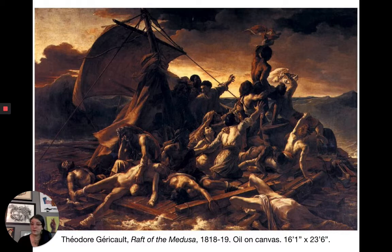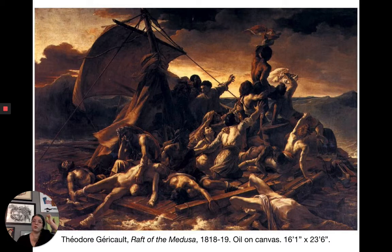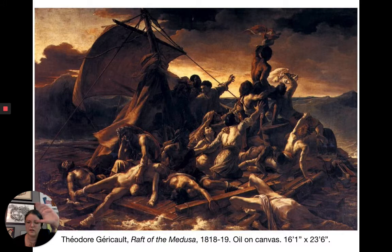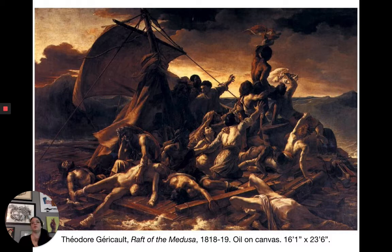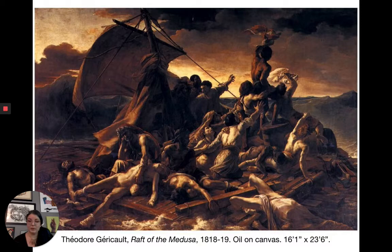Géricault loved Rubens especially and saw something very different there than in David's work. David is still the superstar, but Géricault is much more interested in something that isn't quite so clean and tidy. David has really perfectly smooth compositions without the thick expressive brushstroke you see in Rubens. Géricault then goes to Italy to study Italian painters. This — The Raft of the Medusa — is his most ambitious work: 23 feet wide, exhibited at the Paris Salon of 1819.